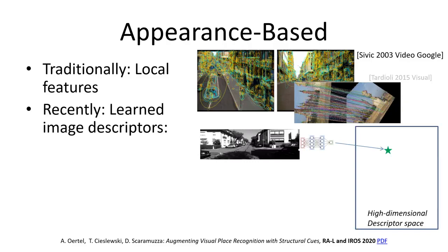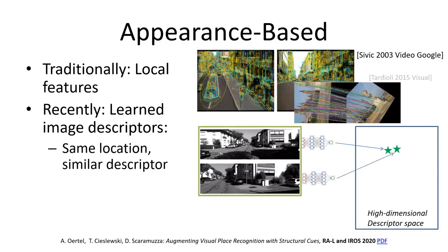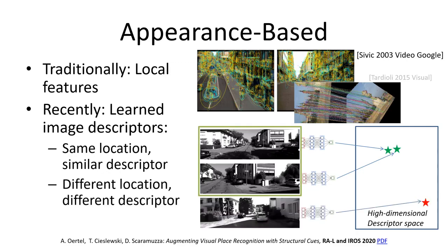More recently, neural network architectures are used which directly transform the input image into a descriptor. They are trained such that the distance between descriptors obtained from images of the same location is small, while the distance between descriptors from images of different locations is large. Images can then simply be matched based on that distance in descriptor space, and invariances can be learned in a data-driven, end-to-end manner.